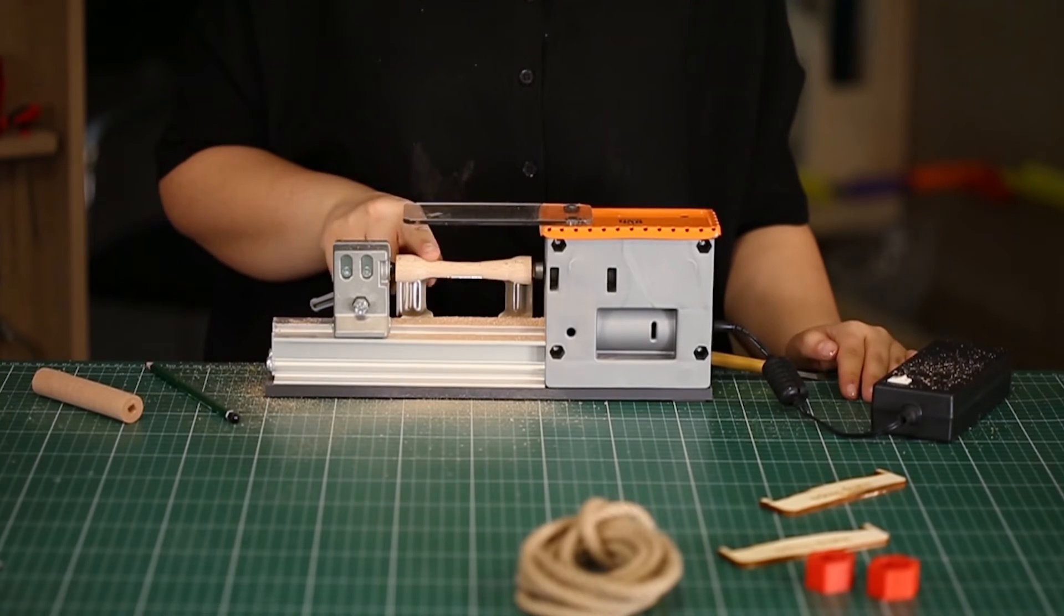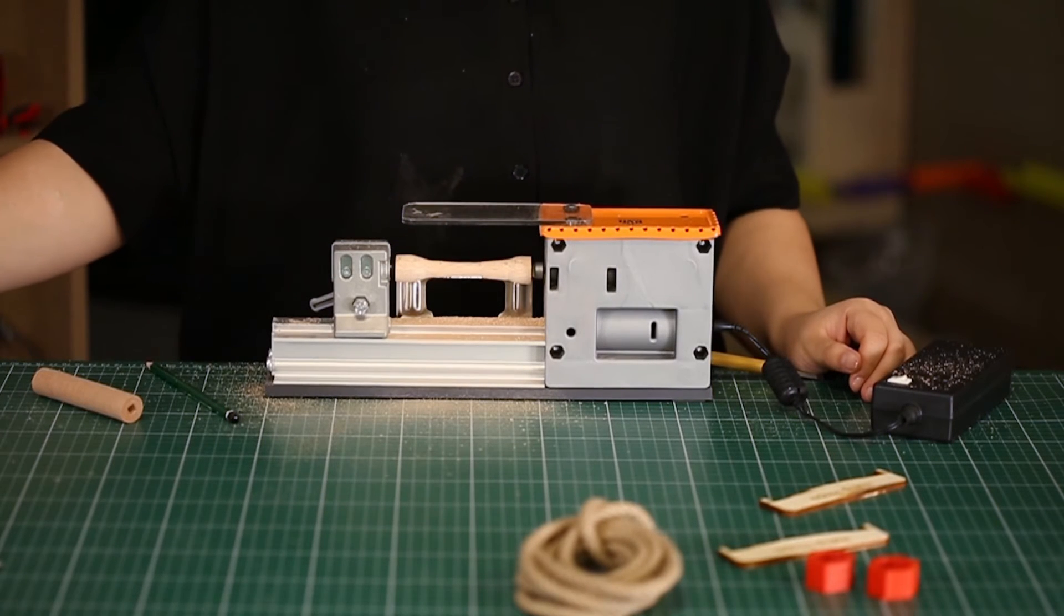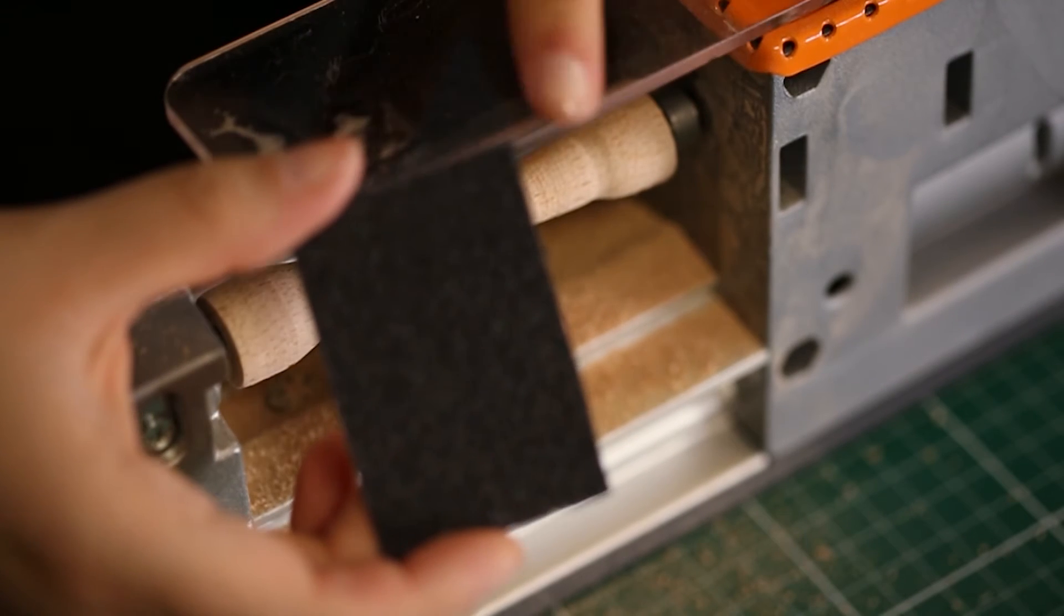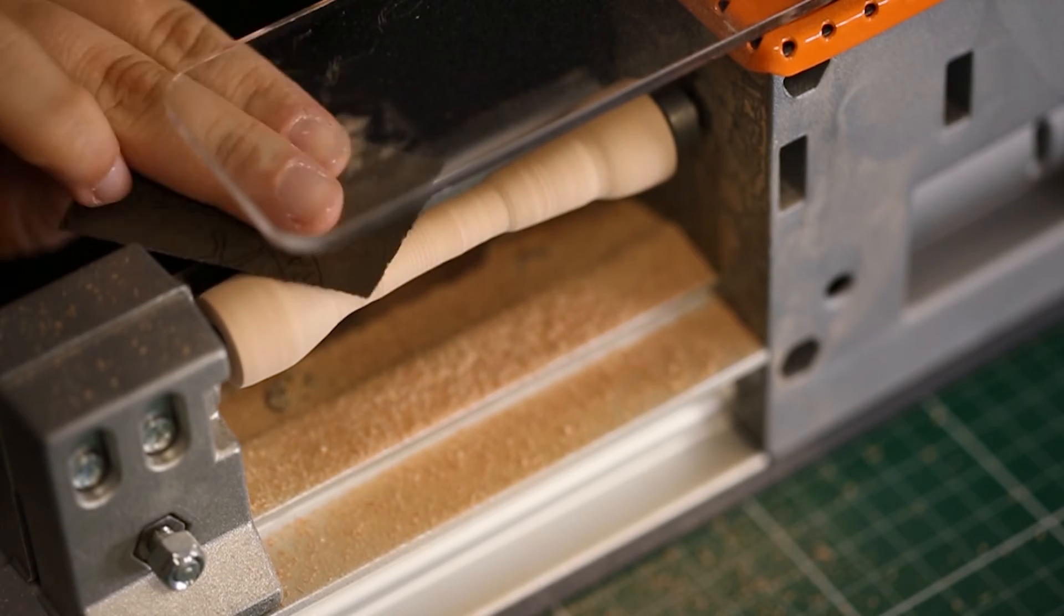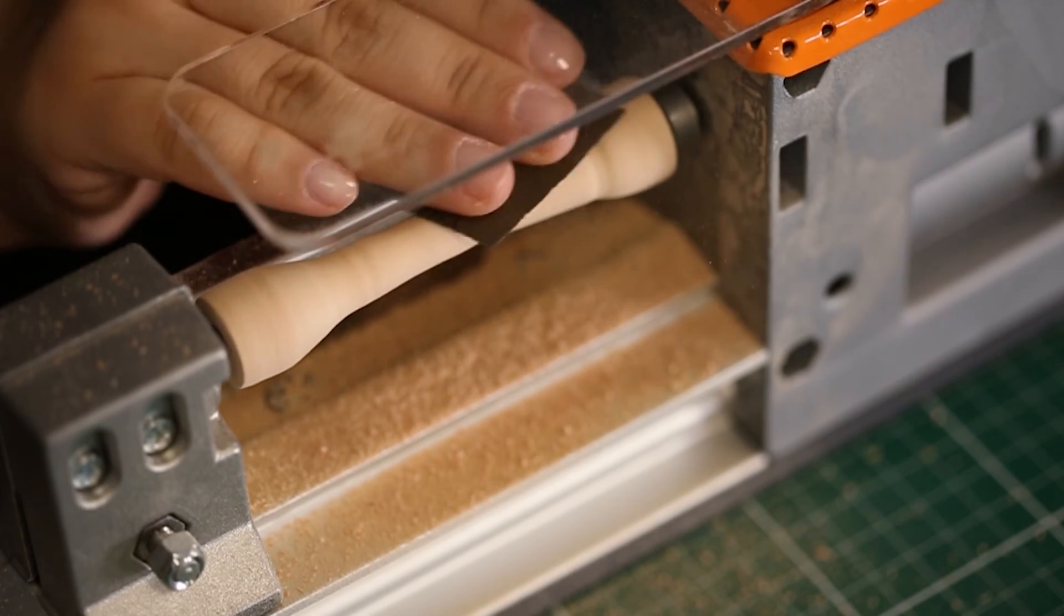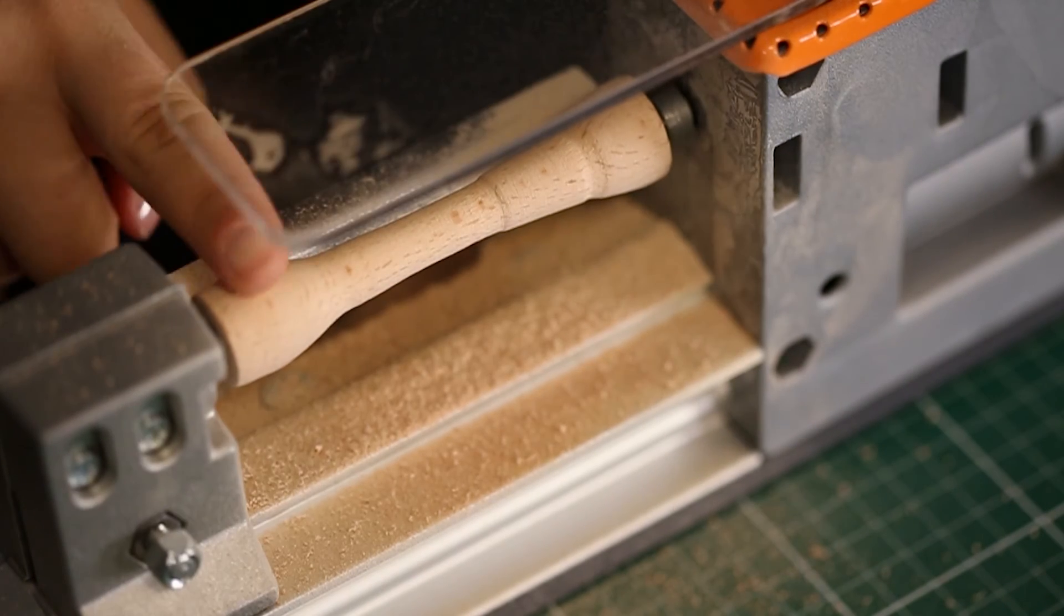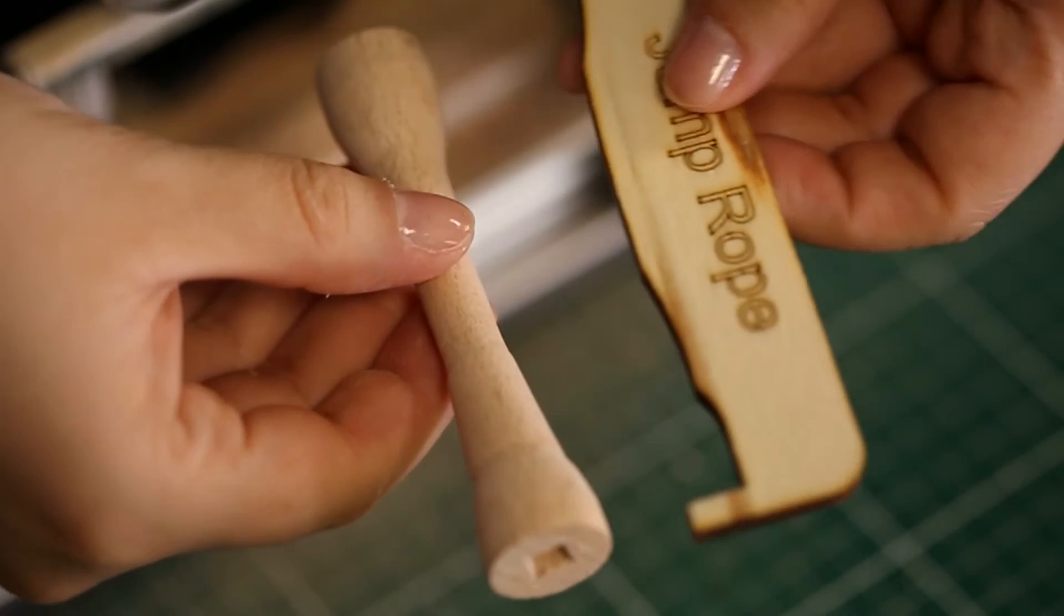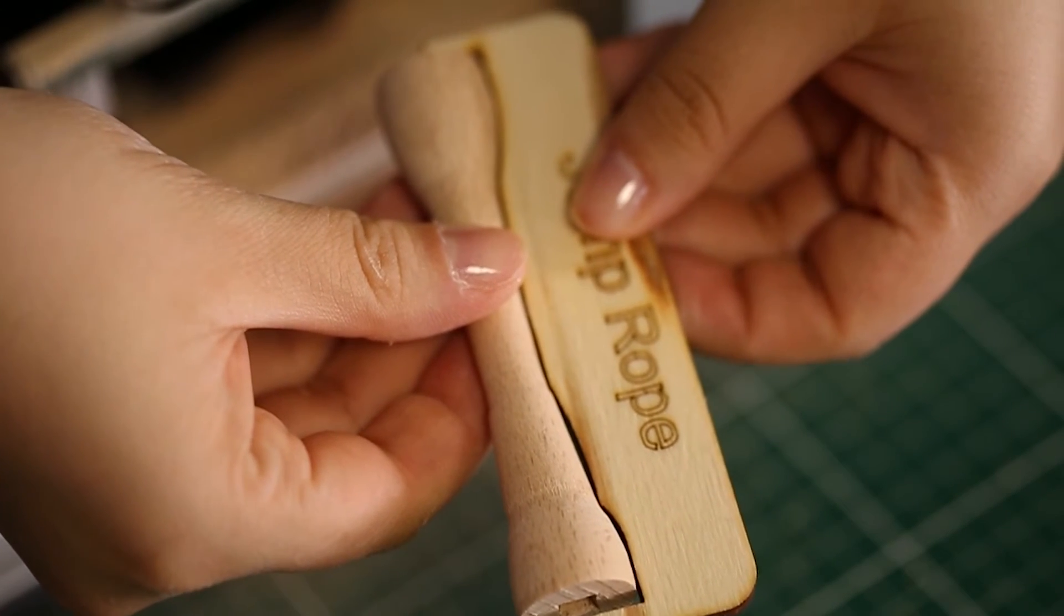We finished our shaping process for the first cylinder. Now, it's time to clean particles off the surface. To clean the surface, we will use sandpaper. We finished the cleaning process for our first cylinder. Now, we can check it with our guides. As you see, it fits perfectly.